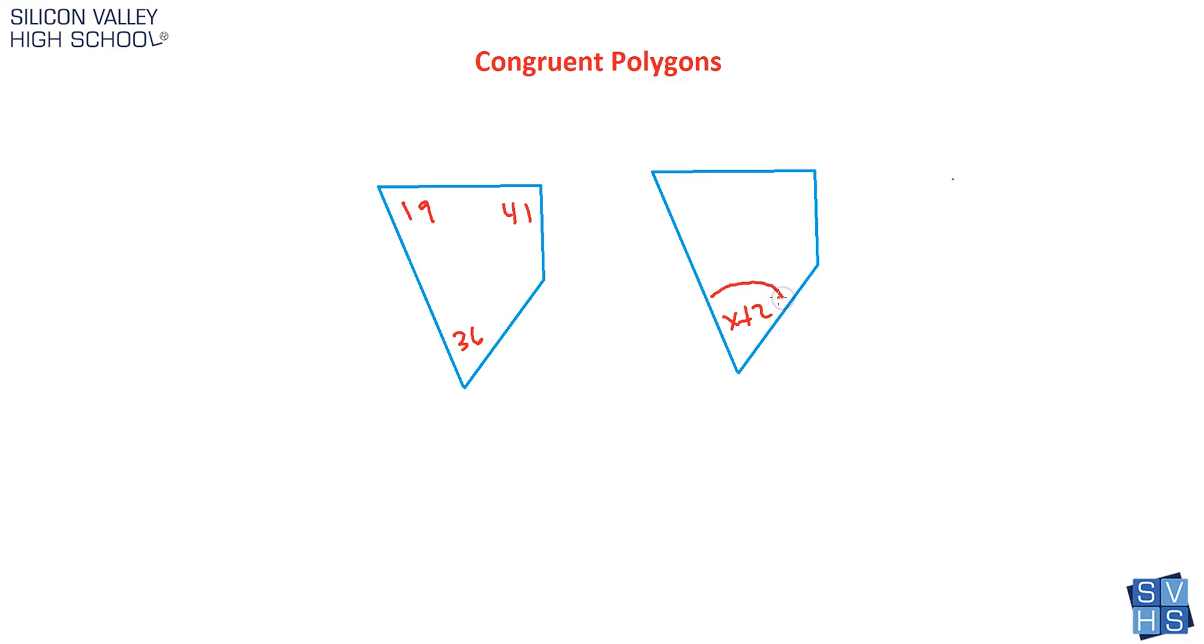You'd look at the picture and say wait a minute, this obviously corresponds to this guy here. I know that if I have two congruent polygons, all corresponding angles are the same, they're equal. Same with corresponding sides, but in this question that's irrelevant, it's all about the corresponding angles. So it's very simple. I would just say if these guys are the same, well then x plus 2 equals 36.